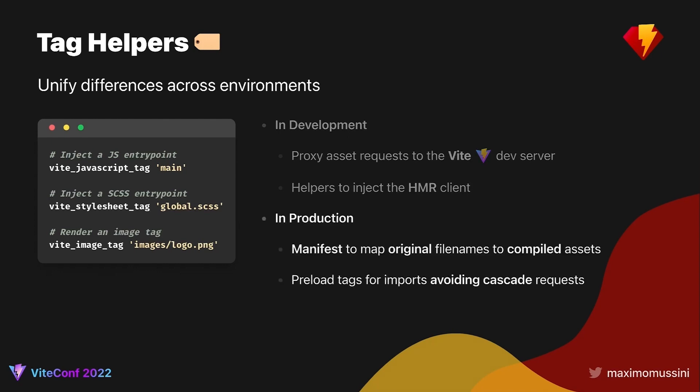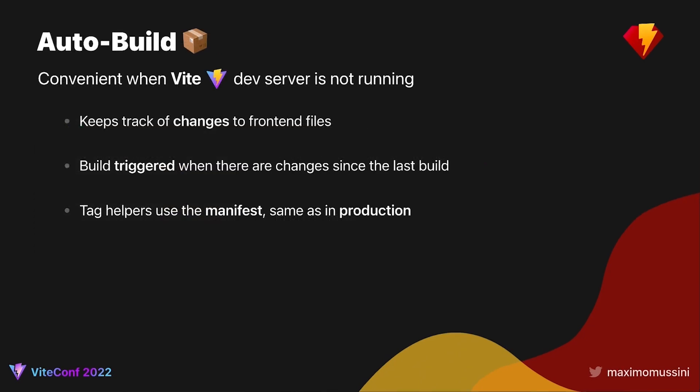In production, the build is configured to output a manifest, which will be used to map original file names to the fingerprinted asset URLs. The manifest is also used to inject associated styles as well as to render preload tags for chunks, in order to optimize load time. AutoBuild is a feature in ViteRuby that will automatically trigger a build if any frontend files have changed since the last build. It ensures that built assets are always up to date when using tag helpers, and it's really convenient when running tests locally or focusing on backend work. In this mode, tag helpers will use the manifest to resolve asset URLs, just like in production.